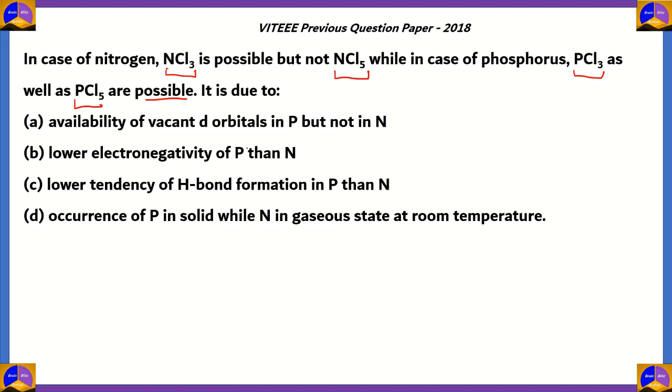Is it A: availability of vacant d orbitals in P but not in N? B: lower electronegativity of P than N? C: lower tendency of H-bond formation in P than N? Or D: occurrence of P in solid while N in gaseous state at room temperature?